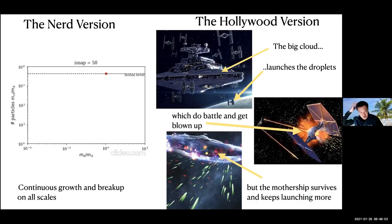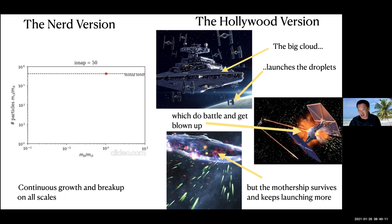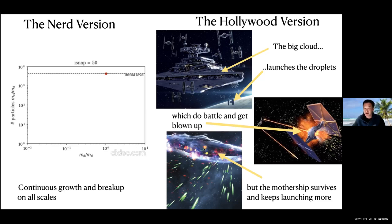The Hollywood version of this picture is that you have a big mothership cloud which launches small transient droplets — the mist. The droplets don't survive, but the big ship keeps going because its cooling time is shorter than the breakup time, and it keeps making small droplets. That's roughly the picture of how things stand: there are both clouds and mist in the CGM, and we must consider both. They both have interesting consequences.